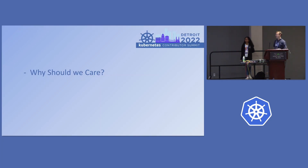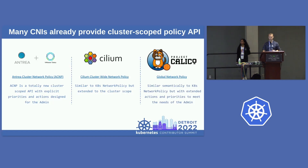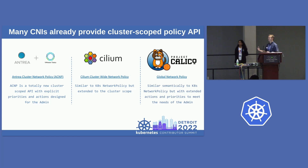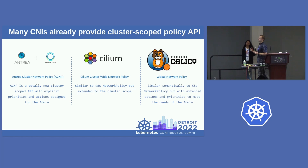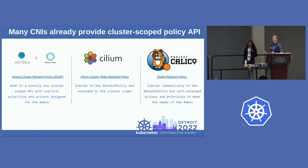Why should we care? Surya and I have both talked to customers who have to create hundreds of identical policies across their cluster — it's really laborious. A lot of downstream implementations already have their own versions: Antrea, Cilium, and Calico — three CNIs with their own cluster-scoped policy. These range from Cilium's cluster-wide network policy, which abstracts NP to cluster scope, all the way to Antrea's totally new API.